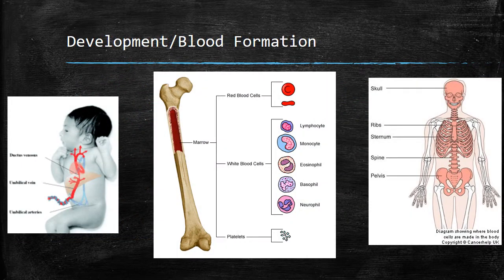Production of red blood cells begins by the second week of gestation. White blood cells and platelets begin by eight weeks. At birth, hematopoiesis, or blood cell production, occurs in the marrow of every bone. Red blood cells are the most abundant cell in the blood. At birth, newborns have a natural elevation of red blood cells due to the high-level erythropoietin, which stimulates red blood cell formation.